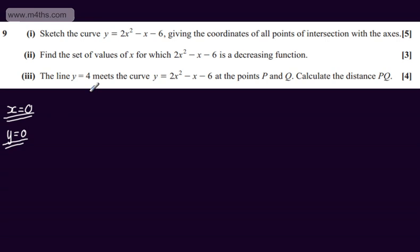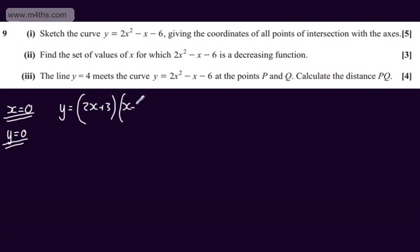The first thing I'm going to do is write this and factor it as the product of two linear factors. So we're going to have y is equal to 2x plus 3 multiplied by x minus 2. Let's just check this works: 2x squared minus 4x plus 3x minus 6.